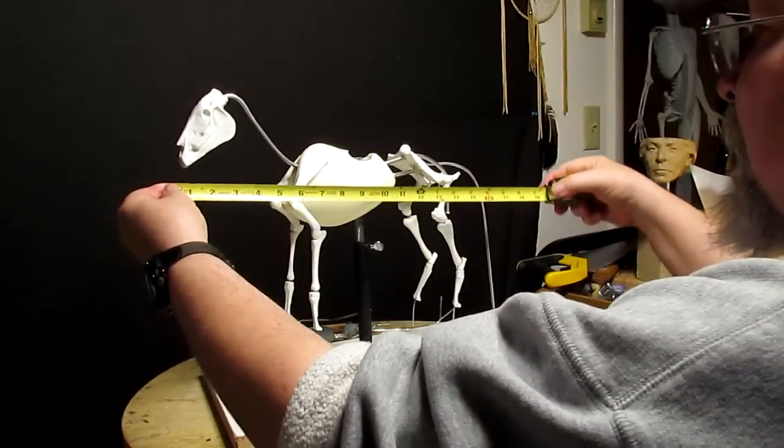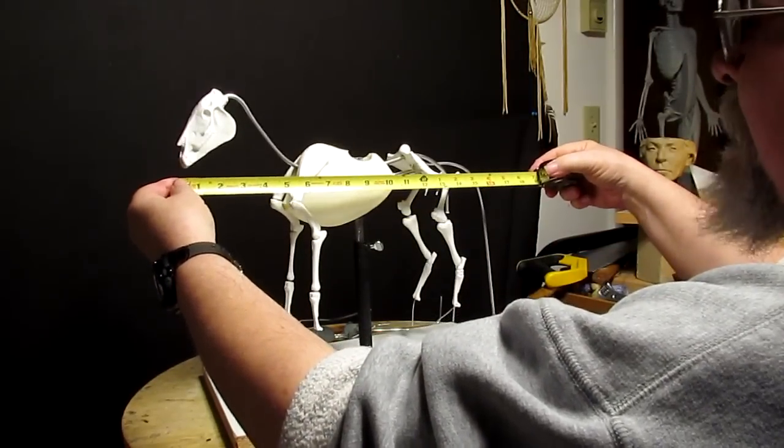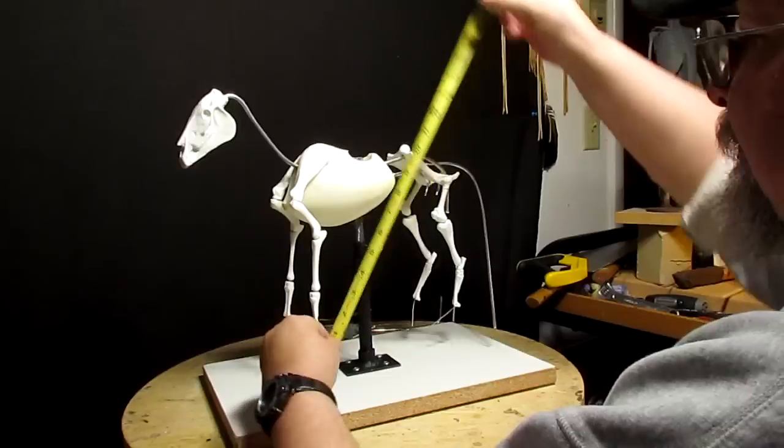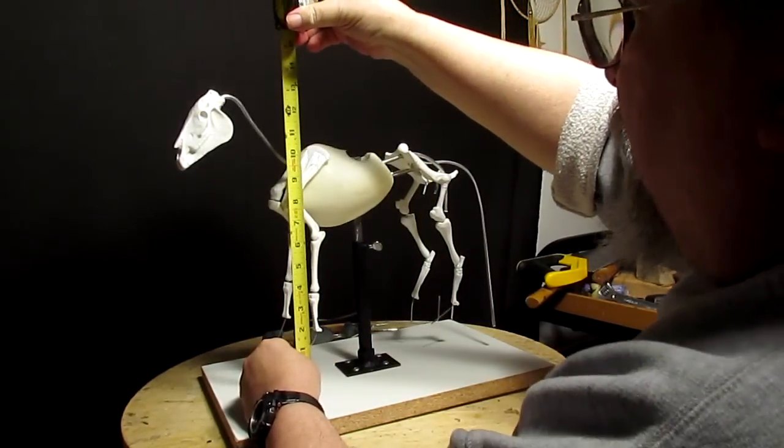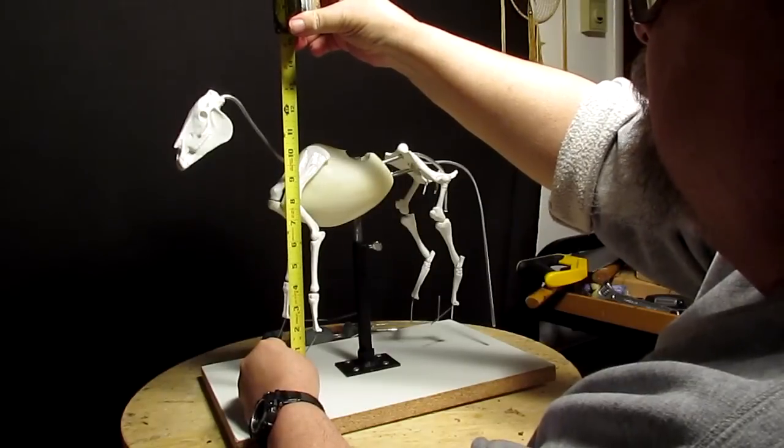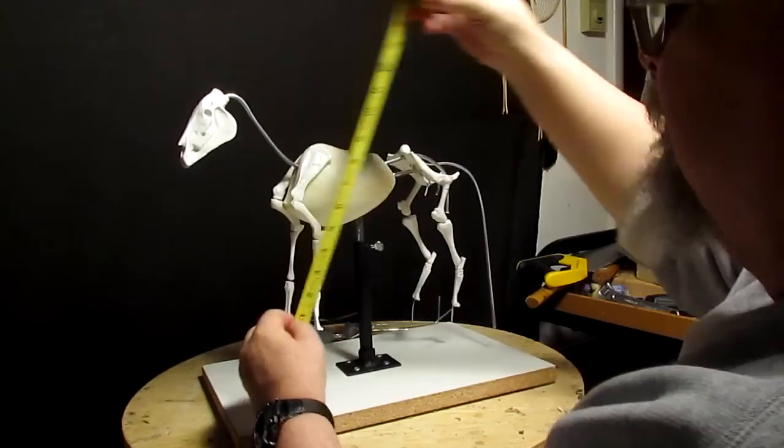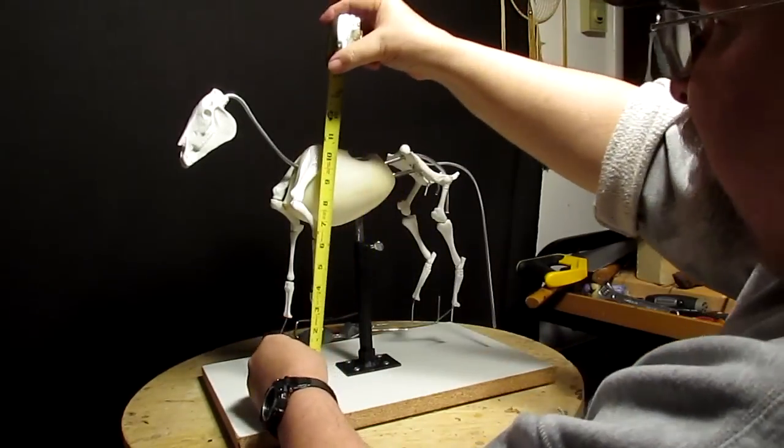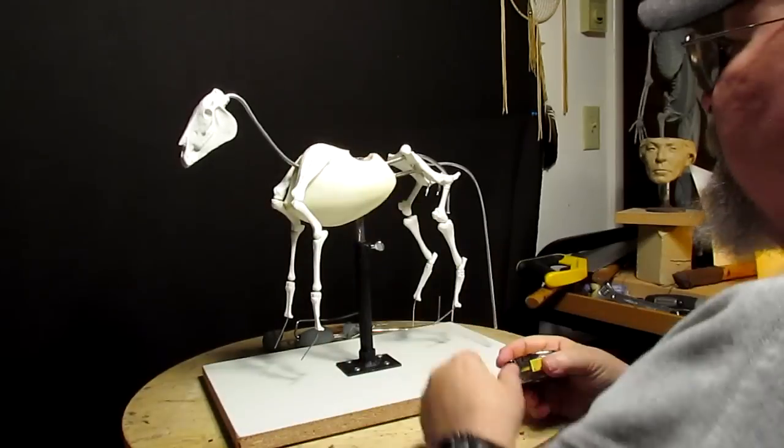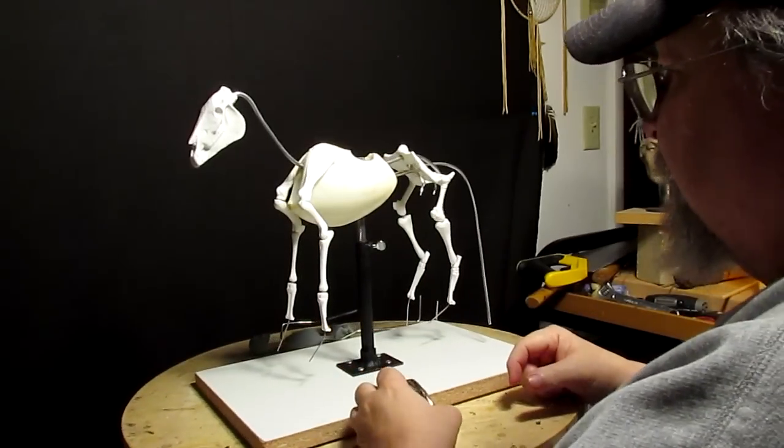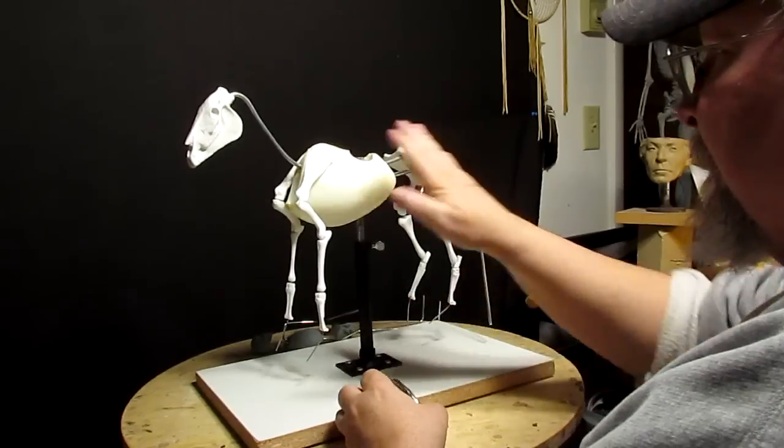This is 17 inches from front to nose, from bottom of the hoof to the top of the head of the horse is about 13 and a half inches. It's about 10 and a half inches to the top of the ribcage, so that gives you an idea of the size of this.